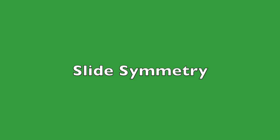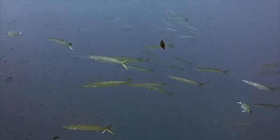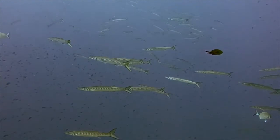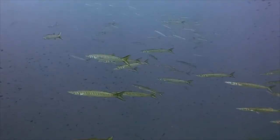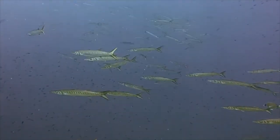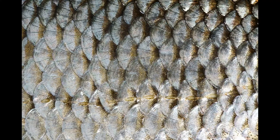We can find slide symmetry all around us. Let's start by looking very closely at a fish. Here are some fish scales. Do you see slide symmetry? Try to find two shapes next to each other that are the same size, same shape, and same measurement.